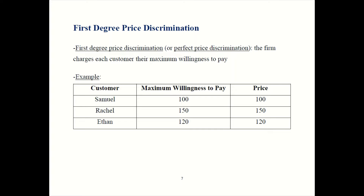The way this works is that the firm charges each consumer their very maximum that they're willing to pay. Here's a simple example. We have three consumers: Samuel, Rachel, and Ethan. Samuel is willing to pay at most $100 for this good, so we charge Samuel $100. Rachel is willing to pay up to $150, so we charge Rachel $150. The very most that Ethan would pay is $120, so we charge Ethan $120.